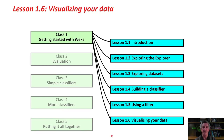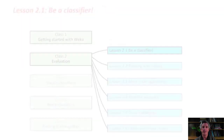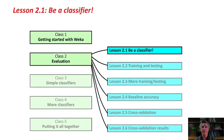This class is all about evaluation. In Lesson 1.4 we built a classifier using J48. In this first lesson of the second class, we're going to see what it's like to actually be a classifier ourselves — we're going to construct a decision tree interactively. Later on in this class we're going to look at more about evaluation: training and testing, baseline accuracy, and cross-validation.